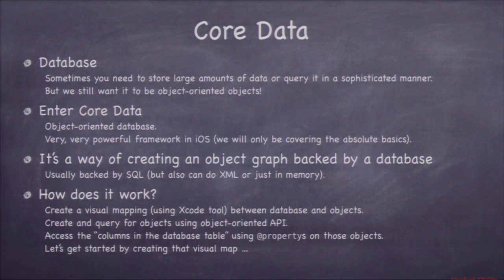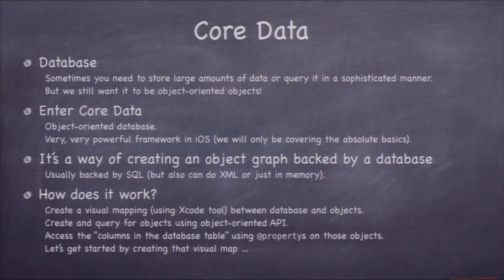Database land is dominated by things like SQL. How many people here know what SQL is? So that's mostly what Core Data is hooked up to — a SQL backend. How does Core Data work? First, you create a visual map using a tool in Xcode — dragging and dropping — to create a mapping between an object-oriented view of your data and the SQL tables-and-rows version of your data.